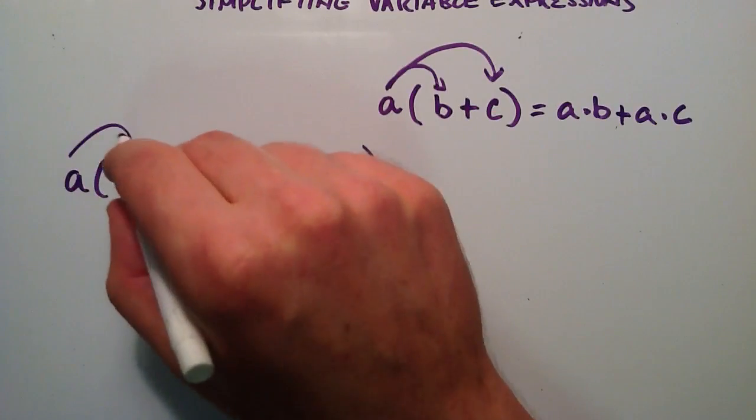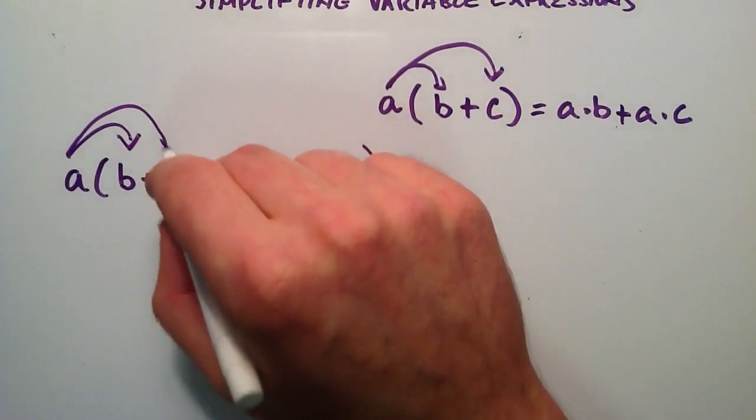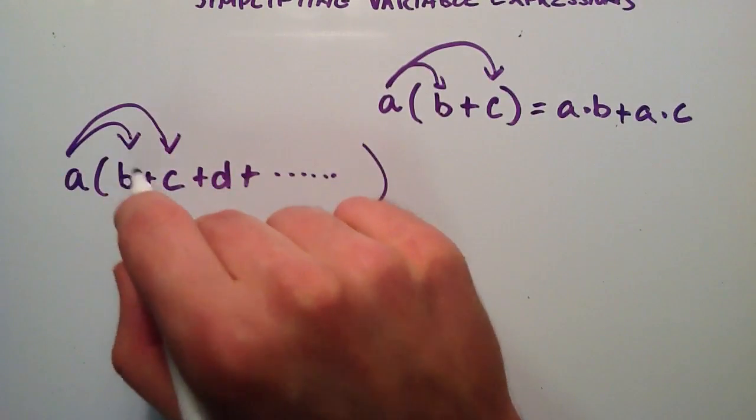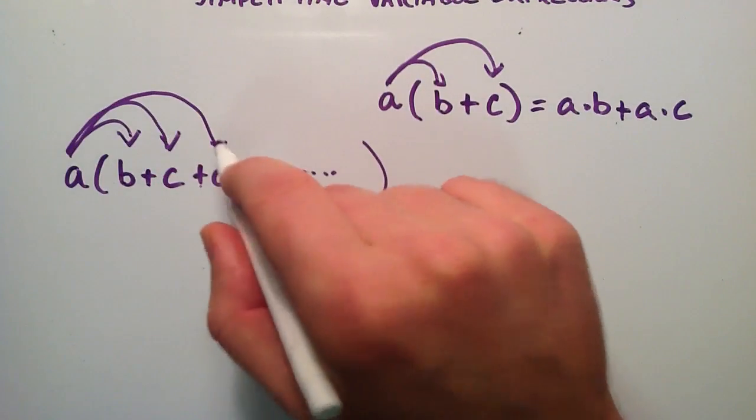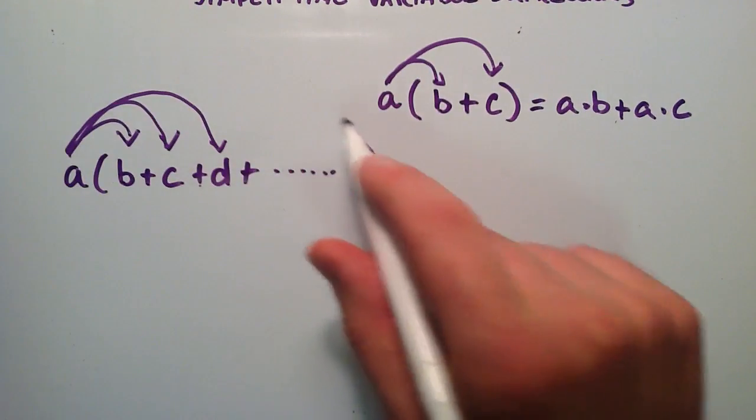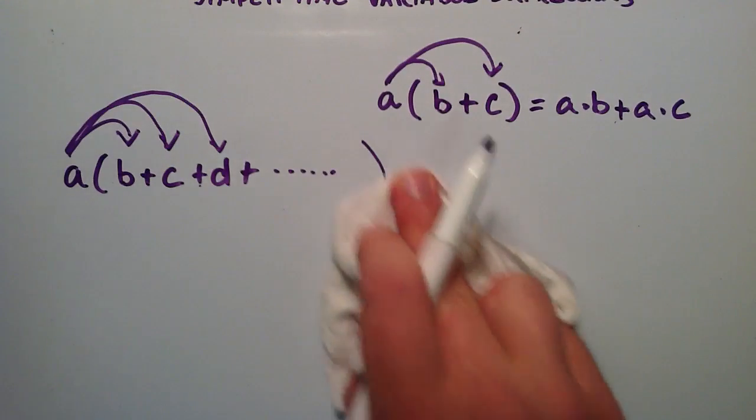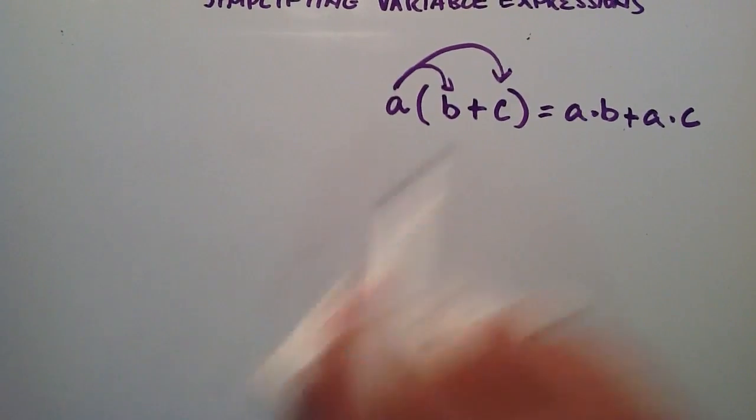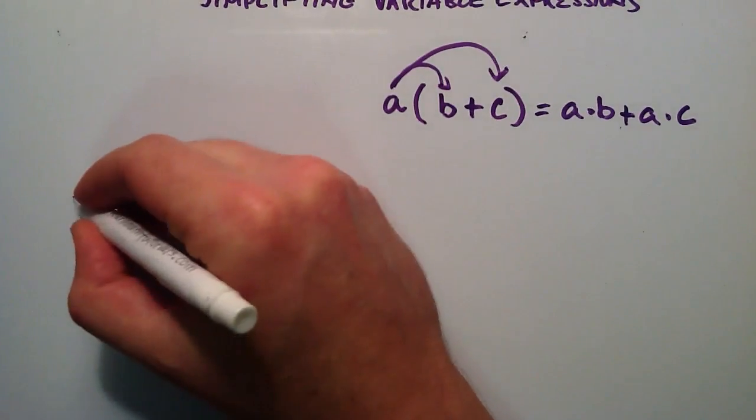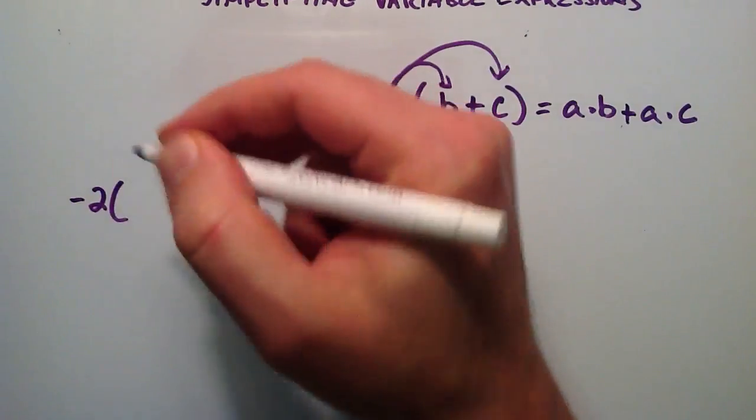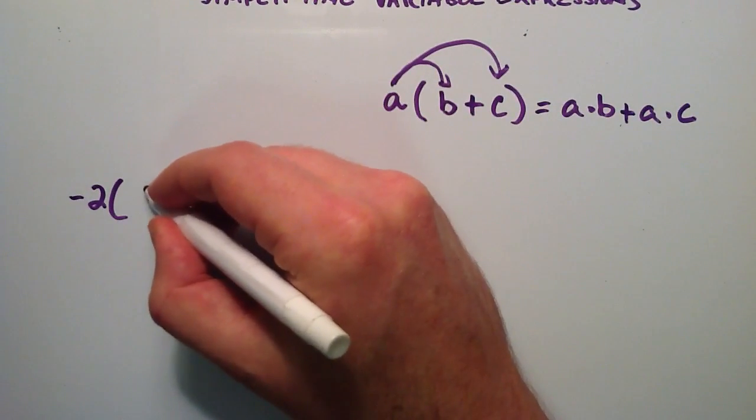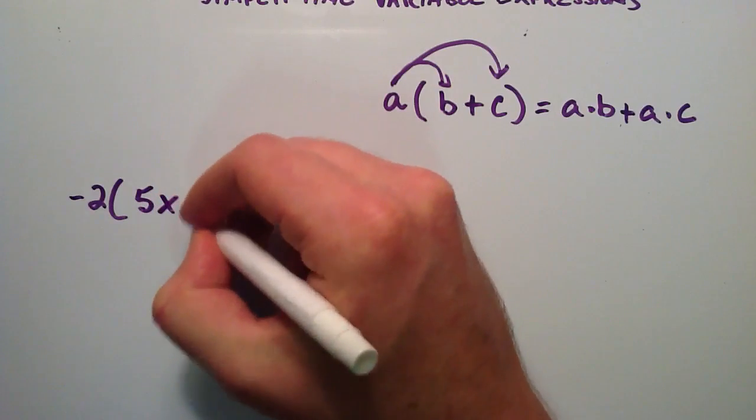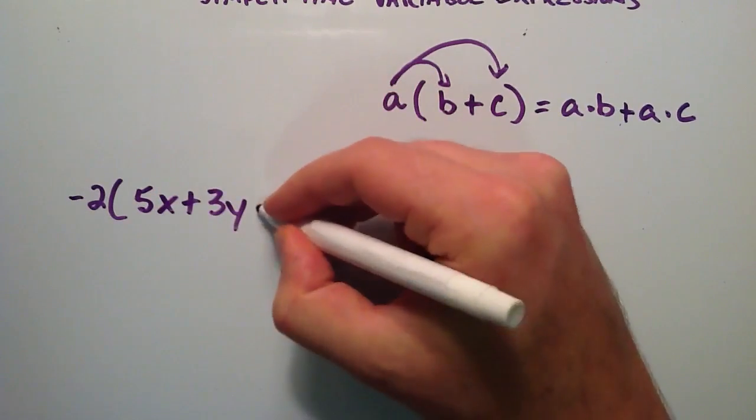You can distribute A times B, A times C. So it would be A times B plus A times C plus A times D plus, and you just keep that pattern going. So let's go ahead and do that. Let's do that with this next example here. Let's do negative 2. And we're going to do negative 2, and then inside the parentheses we have 5X plus 3Y minus 4.